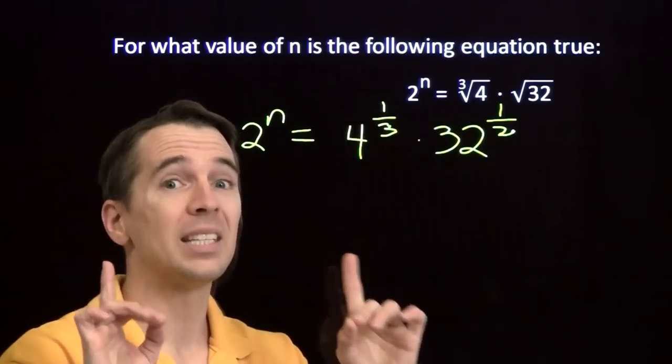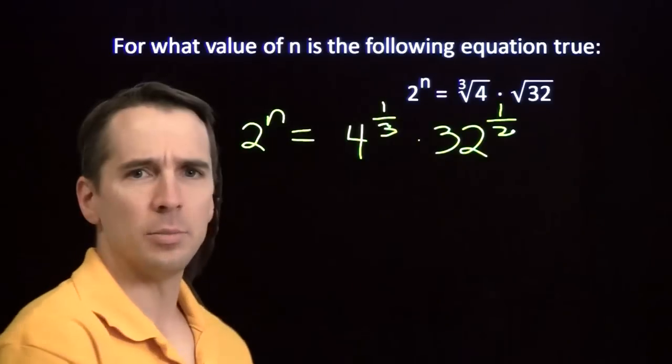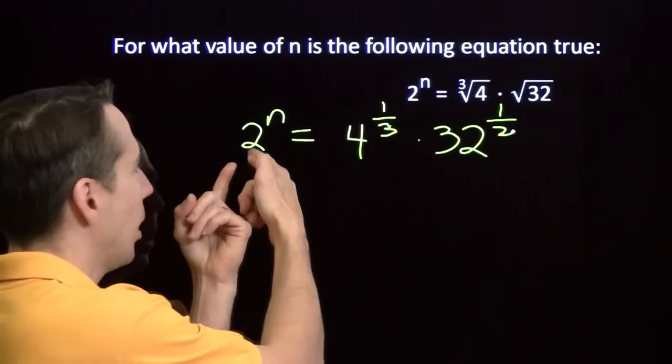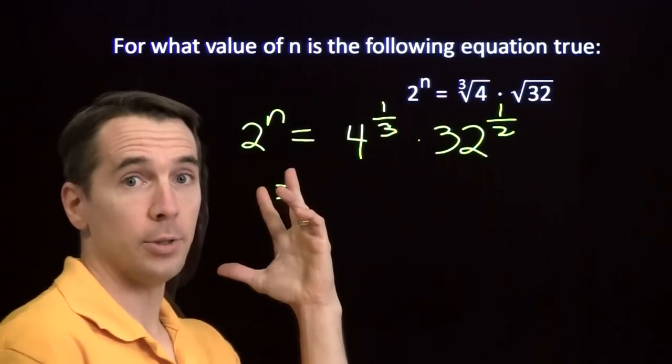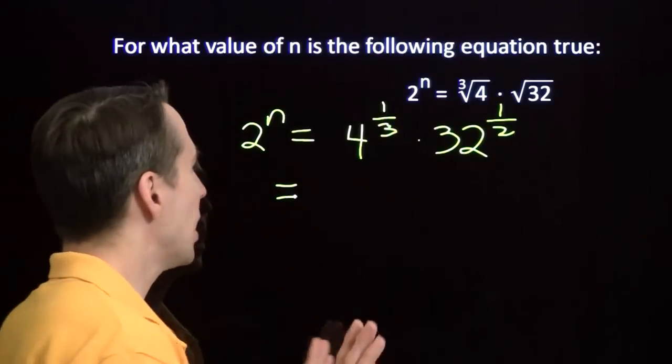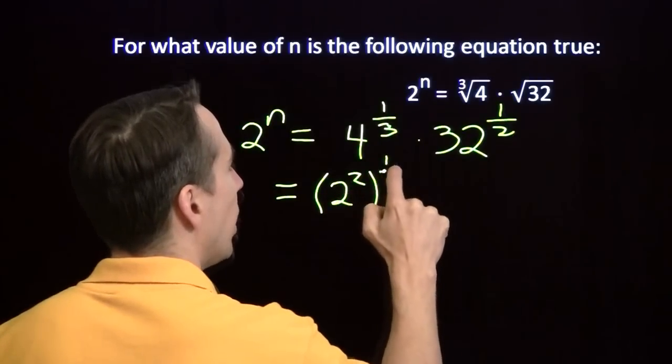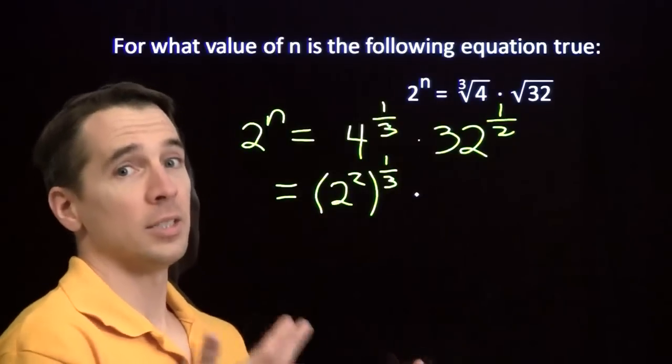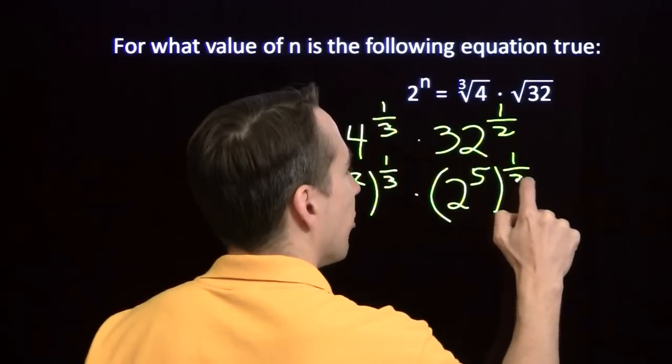But the base has to be the same to add the exponents. So I can't just add the 1 3rd and the 1 half here. I need the base to be the same. And I really like it to be 2, because in the end, I need something that looks like 2 to the n. Fortunately, 4 and 32 are both powers of 2. When you're dealing with problems like this with exponents, lots of different exponents, you get everything with the same base. Sometimes it makes things a lot easier. So I'm going to take that 4 and write it as 2 squared. And I'm going to take that 32. 32 is 16 times 2. 16 is 2 to the 4th. 32 is 2 to the 5th. And that's raised up to the 1 half power.